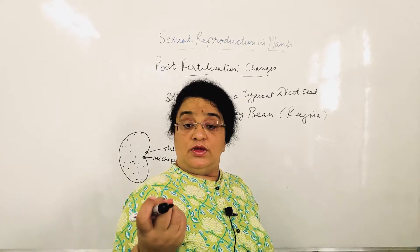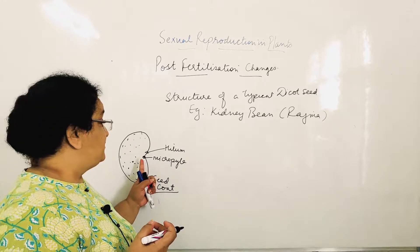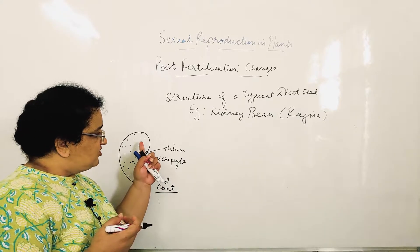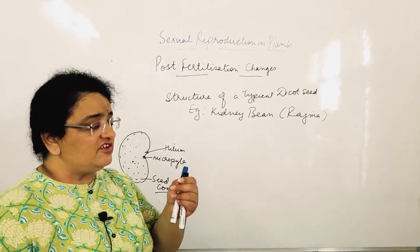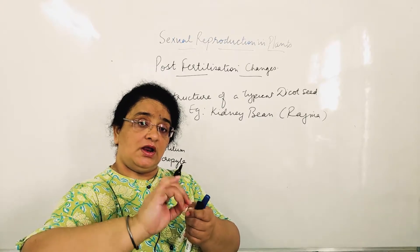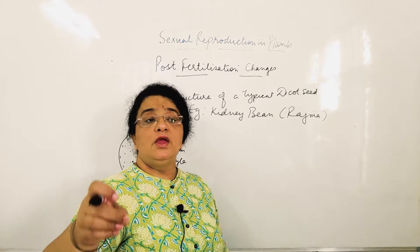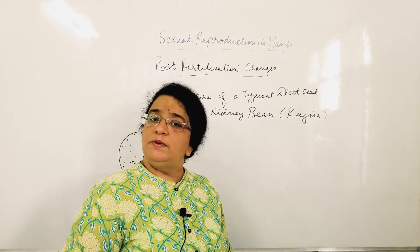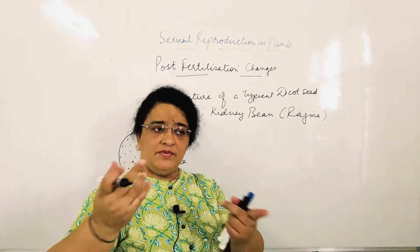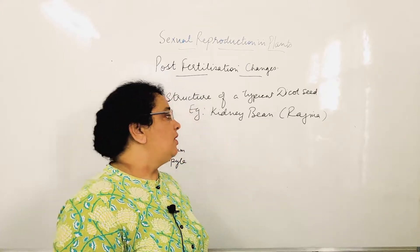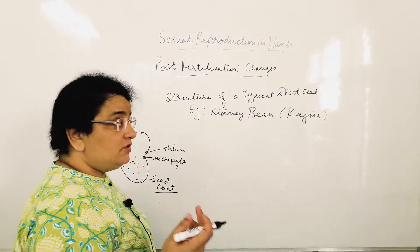If you soak rajma in water for 4–5 hours, it will swell up. Why? Because water is absorbed from the micropyle end. Due to water absorption, the seed coat becomes soft. So you can take out the rajma, peel it, and remove the seed coat. Try it — soak rajma overnight, and in the morning you can easily peel the seed coat.